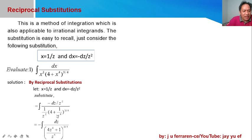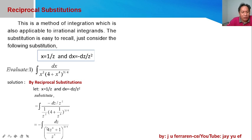The quantity (4 plus x to the fourth power) is replaced with (4 plus (1/z)⁴), raised to the power of three-fourths — equivalent to (1/z³) raised to three-fourths. To simplify, we have a fractional term in the second factor of the denominator, so we combine as one fraction by taking the LCD of z to the third power, giving us (4z³ + 1) raised to the power of three-fourths.